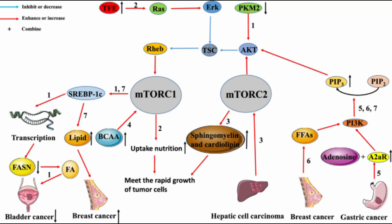mTOR complex 2, on the other hand, is relatively insensitive to rapamycin. It is involved in the regulation of cell survival, metabolism and actin filaments in the cytoskeleton. mTORC2 is activated by growth factors and regulates the activity of certain kinases including AKT, or protein kinase B, which is important for cell survival and proliferation.